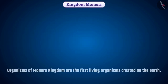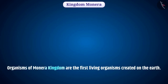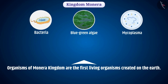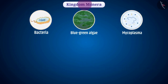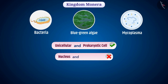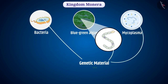Organisms of the Monera kingdom are the first living organisms created on earth, such as bacteria, blue-green algae (cyanobacteria), mycoplasma, etc. All organisms in this kingdom are unicellular and their body is made up of a prokaryotic cell — that is, the cell does not have an organized nucleus and cell organelles. Their genetic material, DNA, is made up of a single circular molecule.